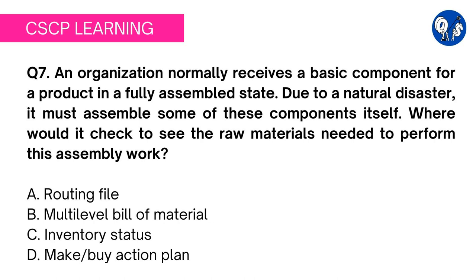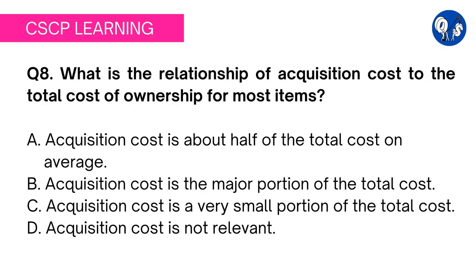Therefore, option B multi-level bill of material is the correct answer. Option C inventory status and option D make and buy action plan are both irrelevant choices here. Let's move on to question 8: what is the relationship of acquisition cost to the total cost of ownership for most items?